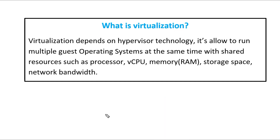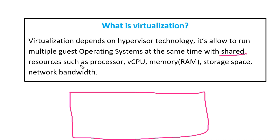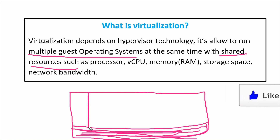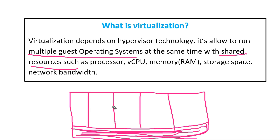Suppose we have a virtual machine with shared resources. We have to run multiple operating systems — we have to run Windows 7, Linux, Red Hat, CentOS, Ubuntu. We have to run some operating systems and share this hardware.